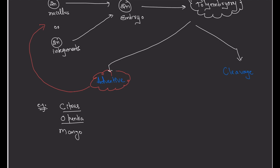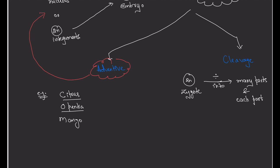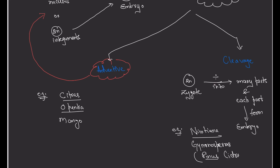Cleavage polyembryony is not a part of apomixis. Here the zygote divides and breaks down into many parts, and each part forms an embryo, resulting in many embryos — polyembryony. This happens in Nicotiana and is also reported in gymnosperms like Pinus and Cedrus.